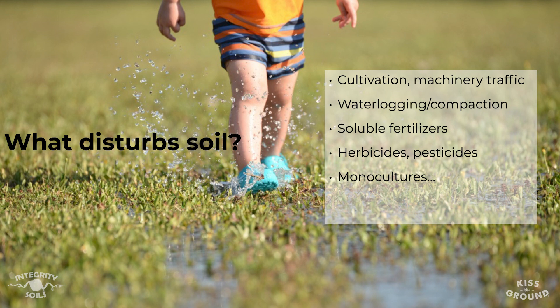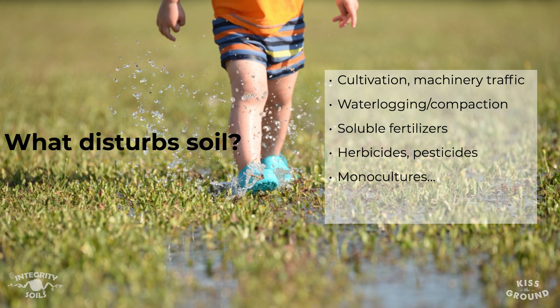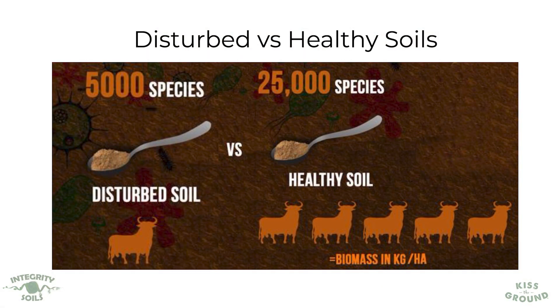If you're growing grasses in a monocultural environment, that too actually creates some kind of disturbance on the type of microbiology under the ground. If we were to look at a soil comparing a disturbed soil environment to a healthy soil, you may have as little as 5,000 species in that teaspoon of soil when it's disturbed, but in a healthy environment you may have as many as 25,000 species.